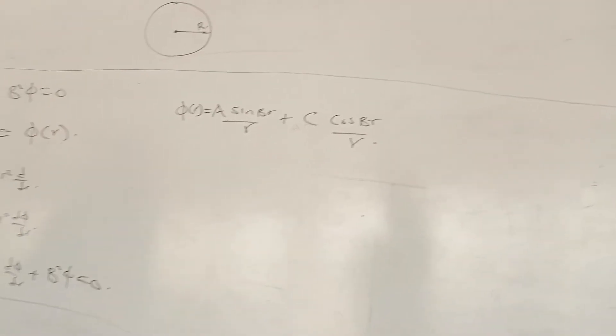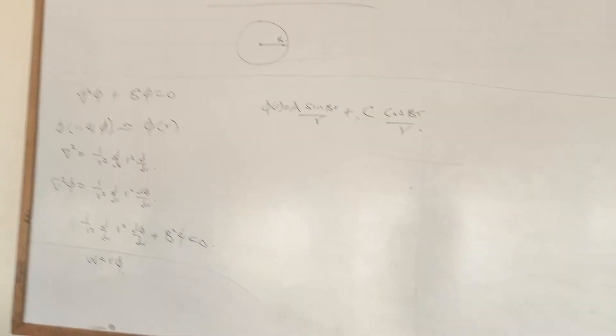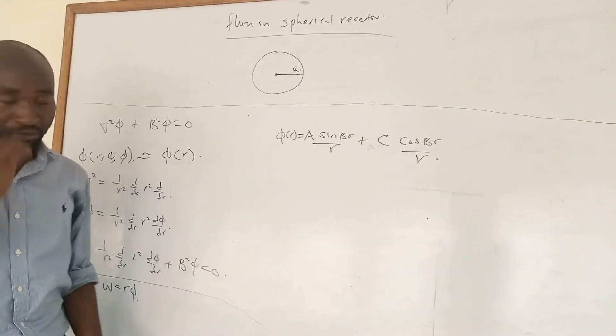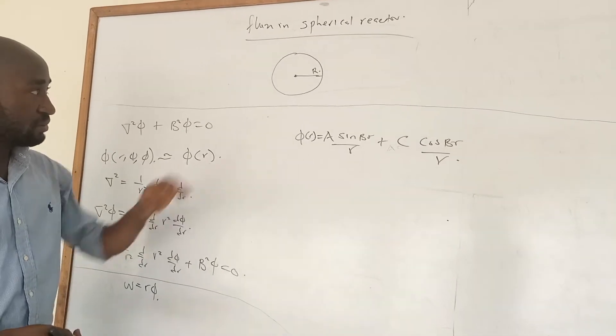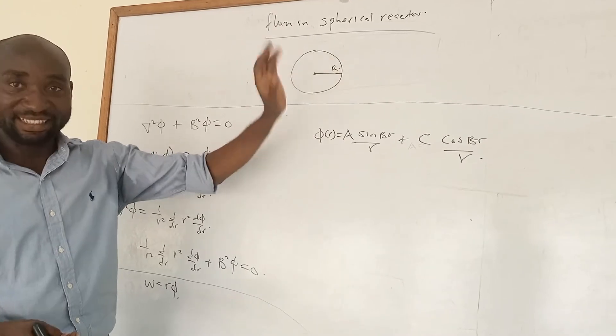So our next step is to get the particular solution for us. So let's look at the boundary conditions that we are going to use. Let's just assume that at the edges the flux will vanish at the edges.